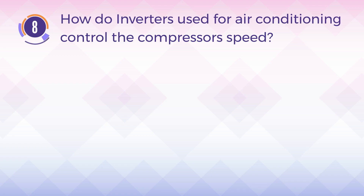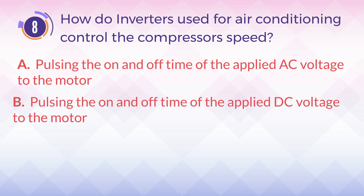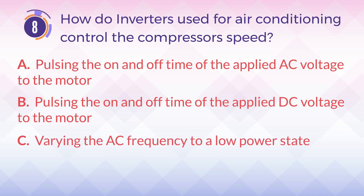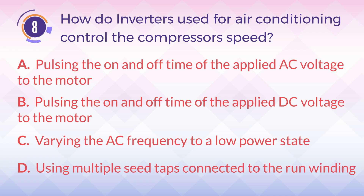Number 8. How do inverters used for air conditioning control the compressor's speed? A. Pulsing the on and off time of the applied AC voltage to the motor. B. Pulsing the on and off time of the applied DC voltage to the motor. C. Varying the AC frequency to a low power state. D. Using multiple speed taps connected to the run winding.